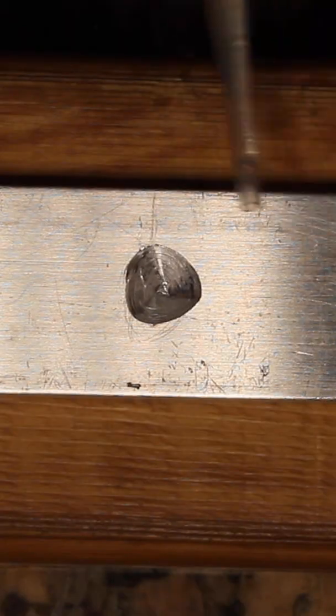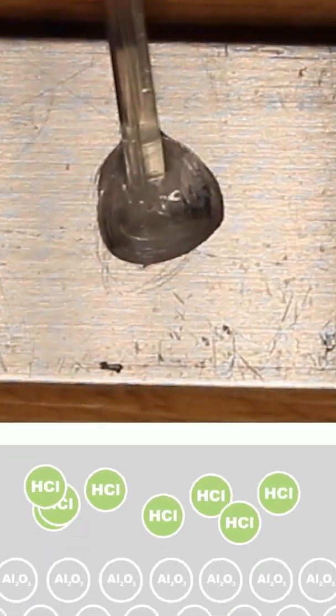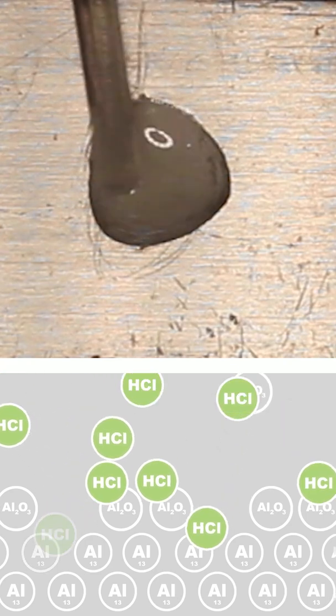After drilling a hole in a piece of aluminum, I use the pipette to add a little bit of the acid into the hole to remove the oxide layer off the surface.